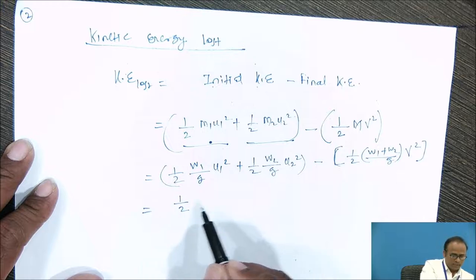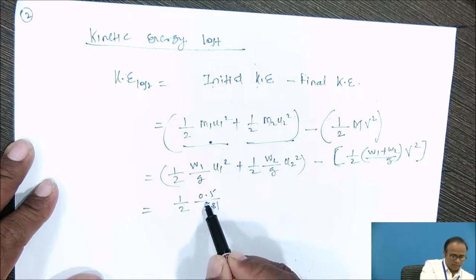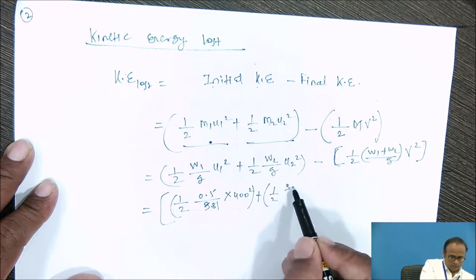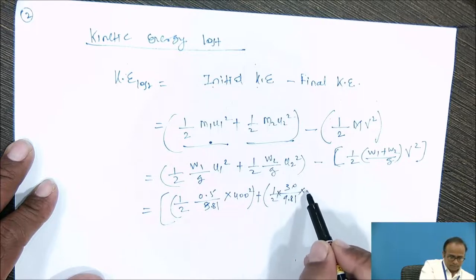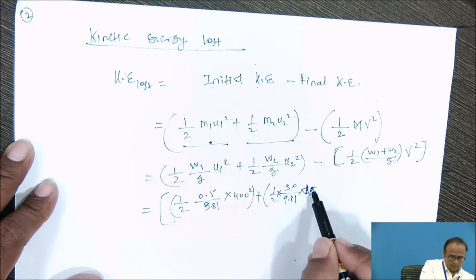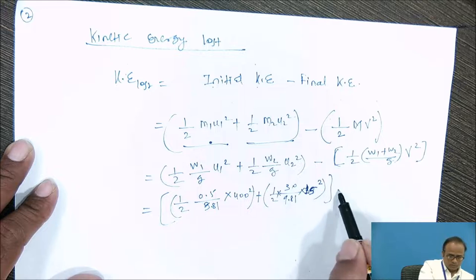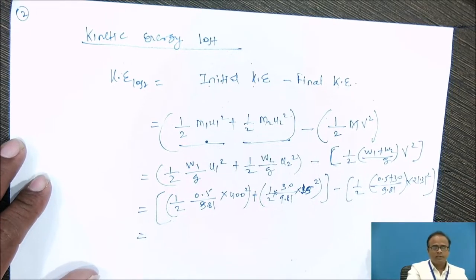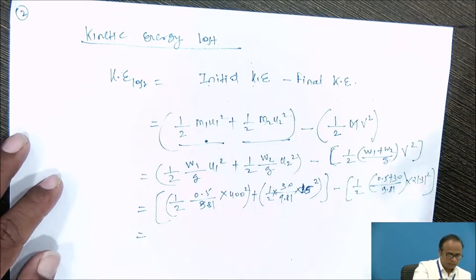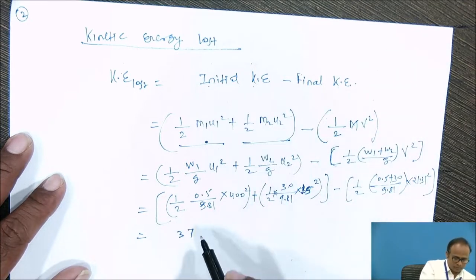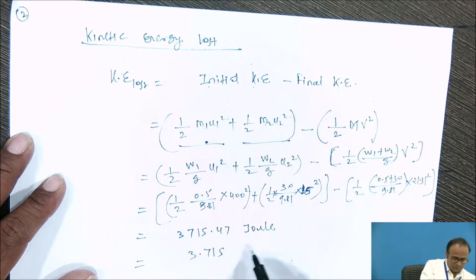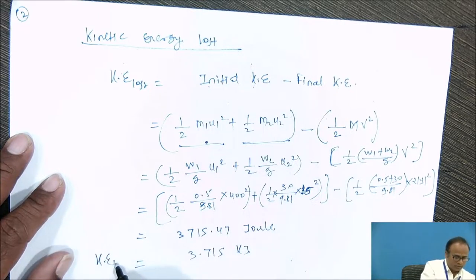Substituting values: ½·(0.5/9.81)·400² + ½·(30/9.81)·15² − ½·(0.5+30)/9.81·21.31². Solving this, the kinetic energy lost equals 3715.47 Joules, which equals 3.715 kilojoules. This is the required answer.